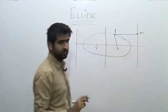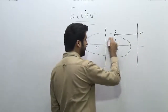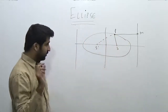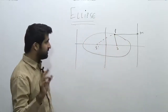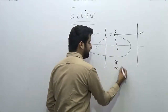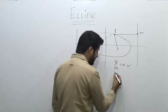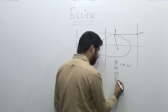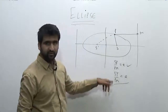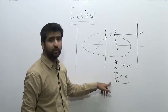This will be the directrix. The distance of this point can also be measured from this focus. The common doubt everybody gets is: I know that SP upon PM is equal to e by the definition. Now if S'P upon PM' is also equal to e — is this ratio also equal to e? This ratio should be equal to e.